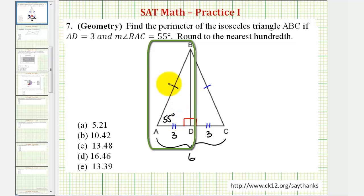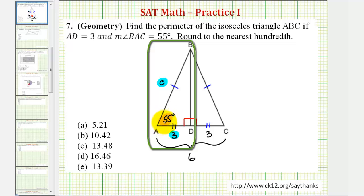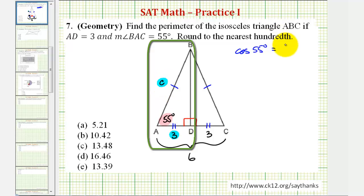Looking at the right triangle on the left, if we want to use 55 degrees in our trig equation, notice that three would be the adjacent side to the angle, and the unknown side — which we'll call C, since it's opposite angle C — would be the hypotenuse of the right triangle on the left. Using the given angle and the adjacent side over the hypotenuse, we can write a trig equation using cosine, since cosine theta equals the ratio of the adjacent side to the hypotenuse. So cosine 55 degrees must equal three divided by C.